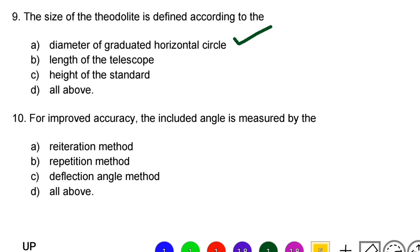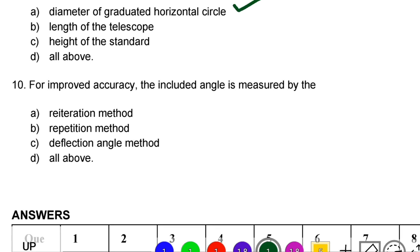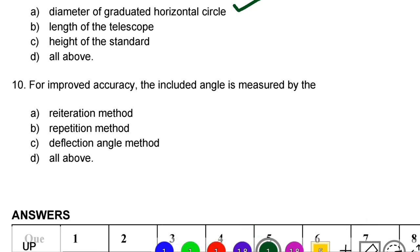Next question: for improved accuracy, the included angle is measured by — option A: reiteration method, option B: repetition method, option C: deflection angle method, option D: all of the above. The correct answer is option B, repetition method. We will see more in the next video. Thank you.